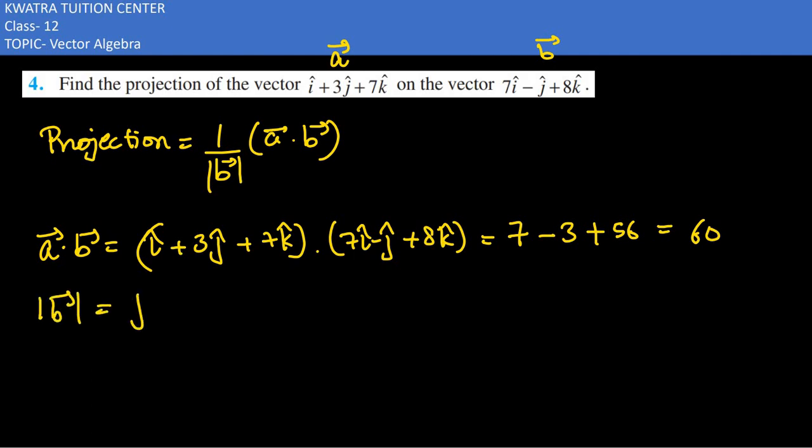For the magnitude of b, we have 7 squared plus minus 1 squared plus 8 squared, which is 49 plus 1 plus 64. That's 50 plus 64, which equals root 114.